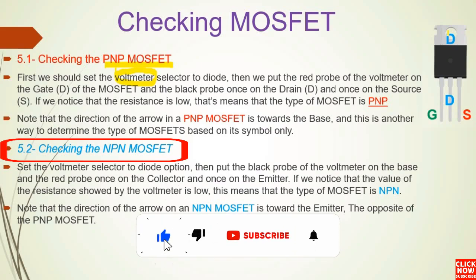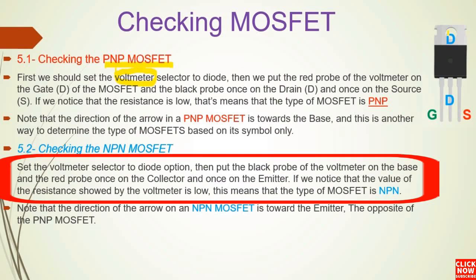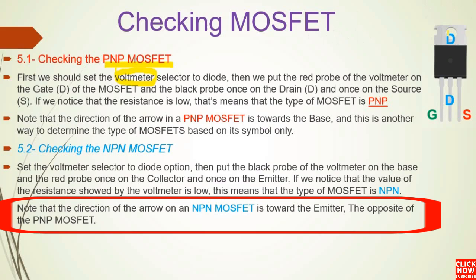To check the NPN MOSFET, use the same working principle. Set the multimeter selector to the diode option. Then put the black probe on the base and the red probe once on the collector and once on the emitter. If the resistance reading shown by the multimeter is low, the MOSFET type is NPN. Note that the direction of the arrow on an NPN MOSFET points towards the emitter — the opposite of the PNP MOSFET.